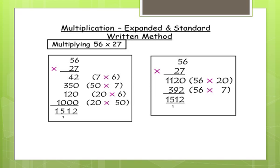5 is in the 10th place. So the place value of 5 is 50. So we can take 50 times 7. 50 times 7 is 350. Write it down. The next 56 times 20. For that 6 times 20 is 120. 50 times 20 is 1000. Write down.